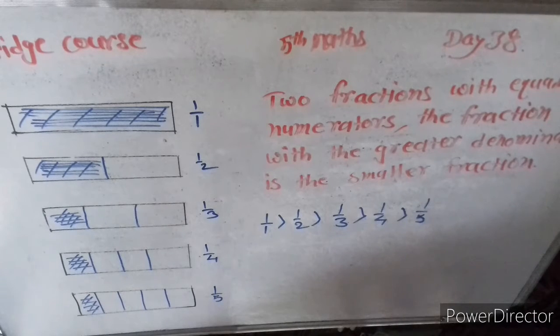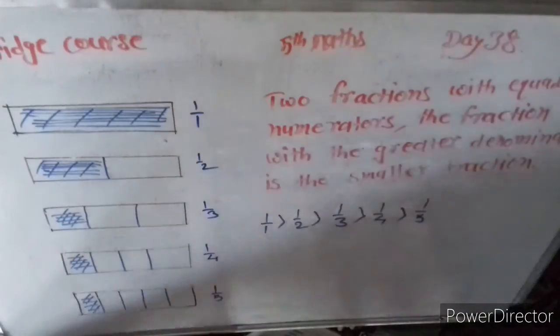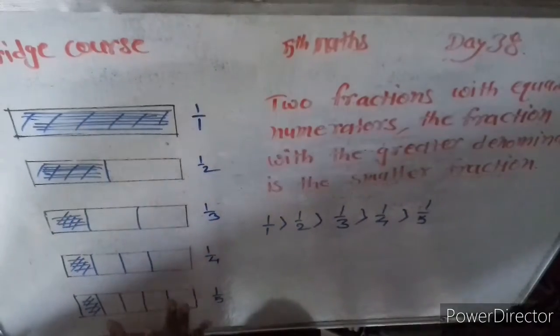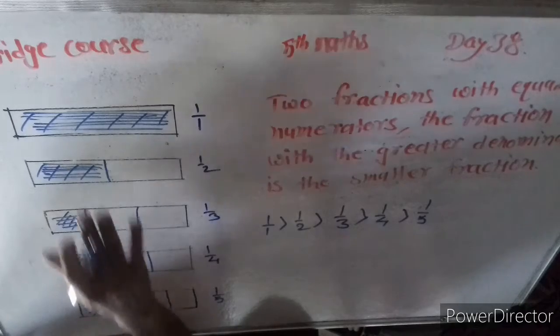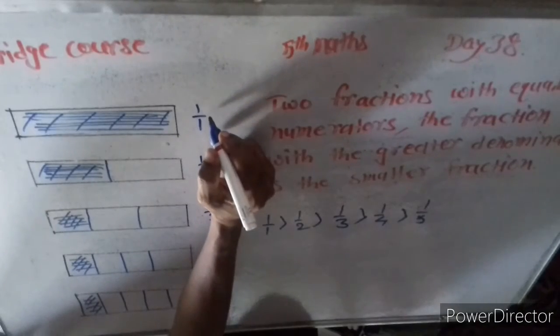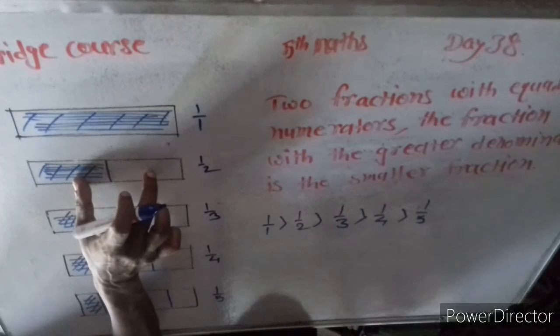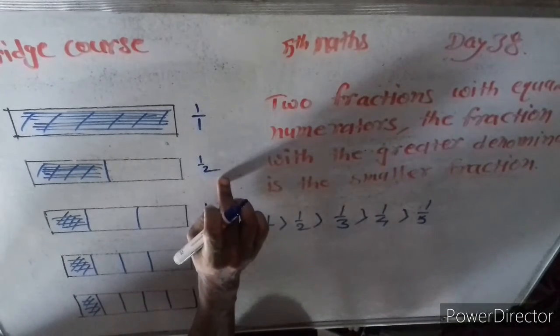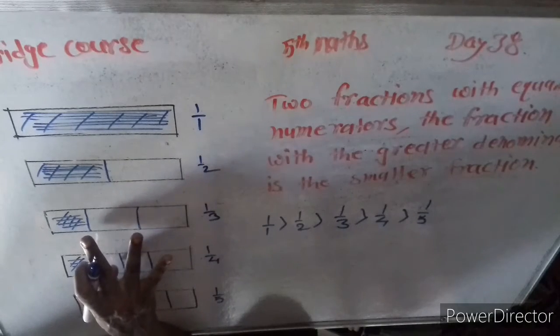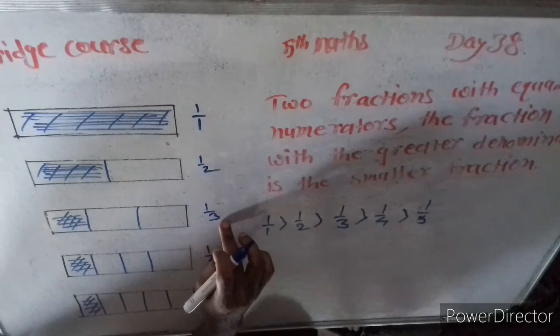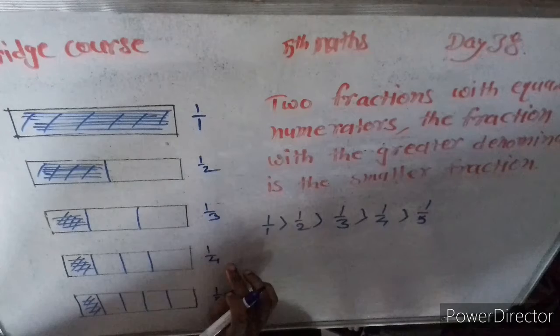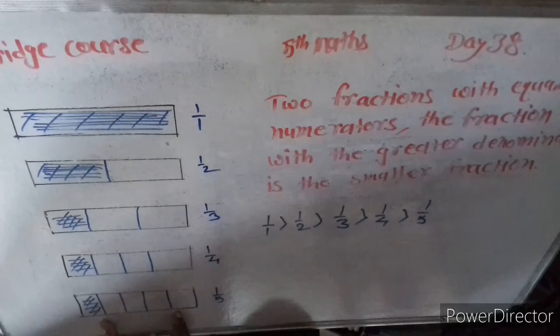Now look at the figures. First, all figures are same length, it is completely colored, so one by one. It's divided into two parts, so one by two. Next, it's divided into three parts, one by three, four parts, one by four, one part of color here, fifth part, so one by five, and one part of color.